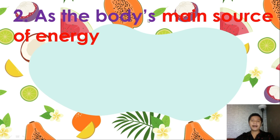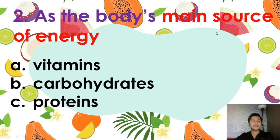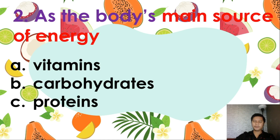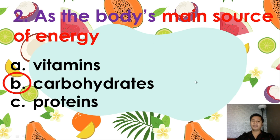Number two: what serves as the body's main source of energy? Is it A, vitamins? B, carbohydrates? Or C, proteins? Look at the keyword: main source of energy. The correct answer is B, carbohydrates — carbohydrates are the main source of energy.